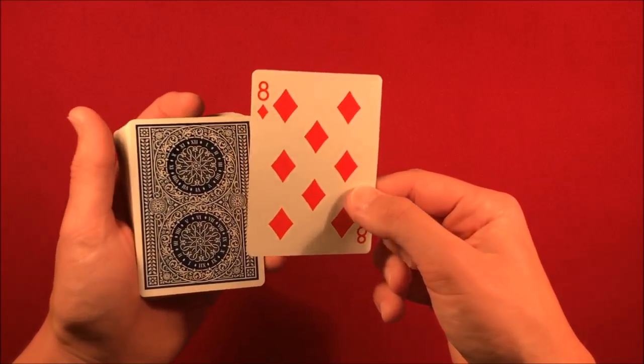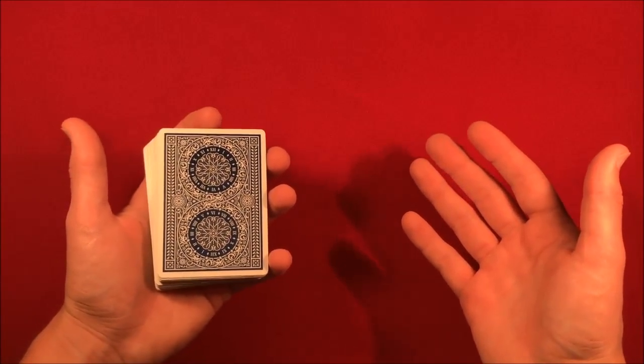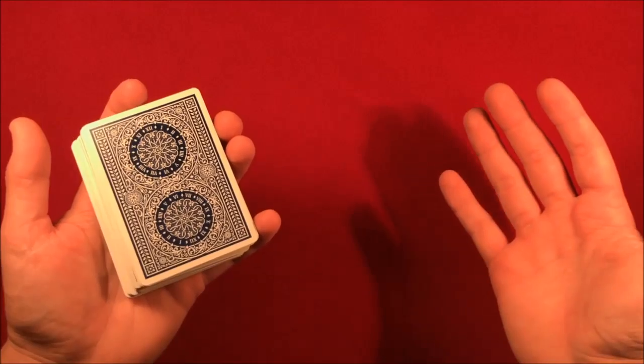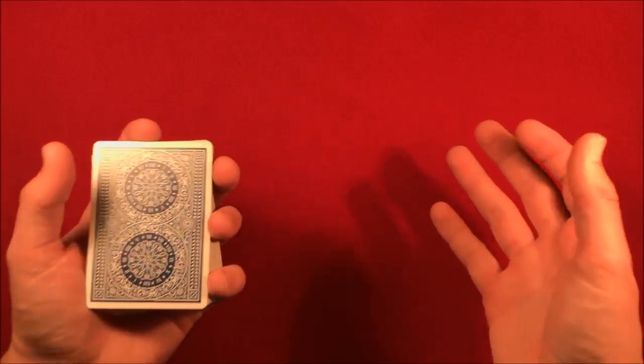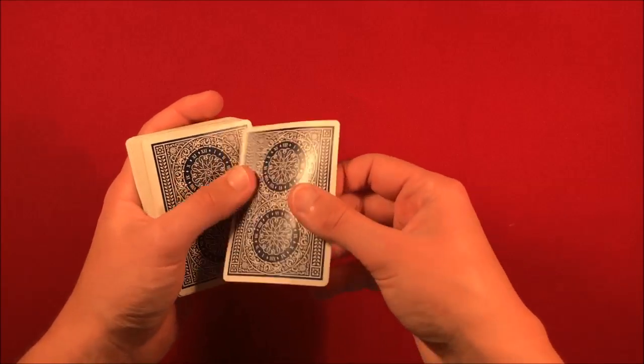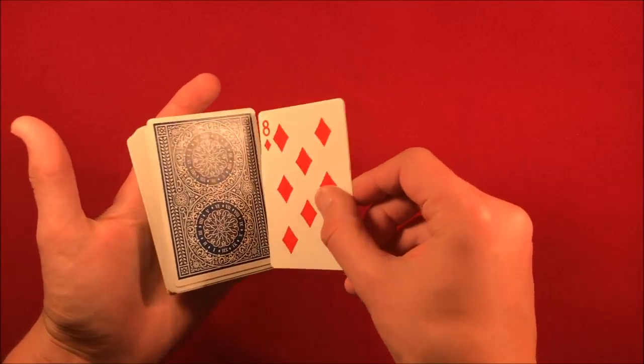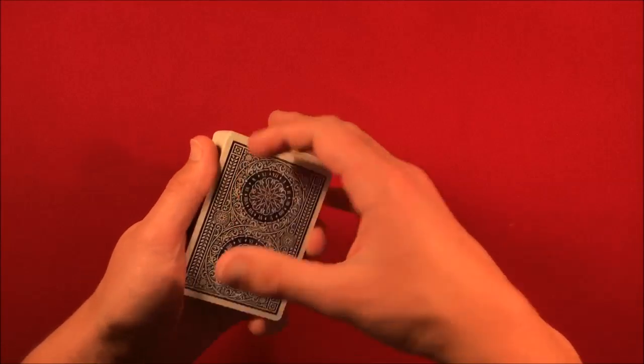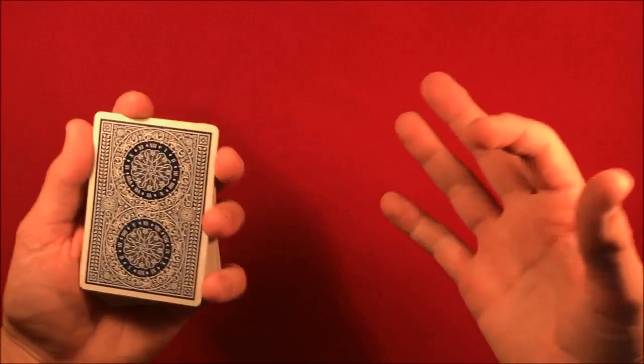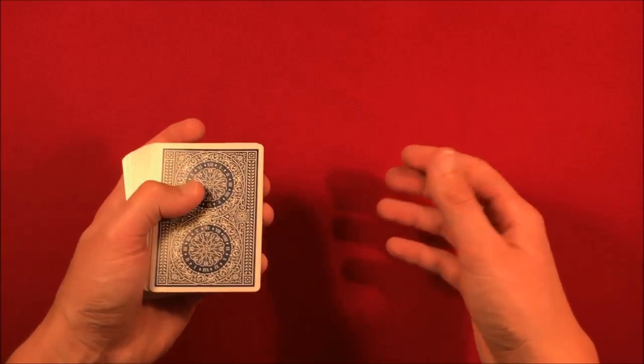In this case we have the eight of diamonds. You can write this down, you can tell the spectator verbally that they're going to stop you at the eight of diamonds or whatever. You can do it any way you'd like to make the effect a little bit more magical. But I just showed you guys the bare bones thing in the performance. So you're going to flip the deck over. You know the card that they're going to stop at is the eight of diamonds, so you can have them literally say stop wherever they want to.